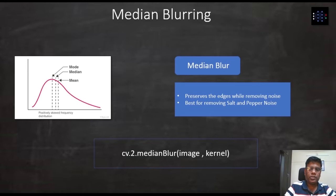Median blur generally preserves the edges while removing the noise and it is best for removing salt and pepper noise.